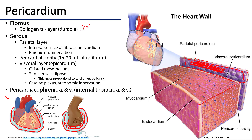The pericardial cavity typically contains about 15 to 20 mL of fluid known as ultrafiltrate, secreted by the visceral layer, which is ciliated mesothelium. The visceral layer becomes the surface of the heart and is called the epicardium. Deep to the epicardium is subserosal adipose connective tissue, and its thickness is proportional to cardiometabolic risk — more epicardial fat correlates with greater risk of coronary artery disease, hypertension, insulin resistance, and diabetes.